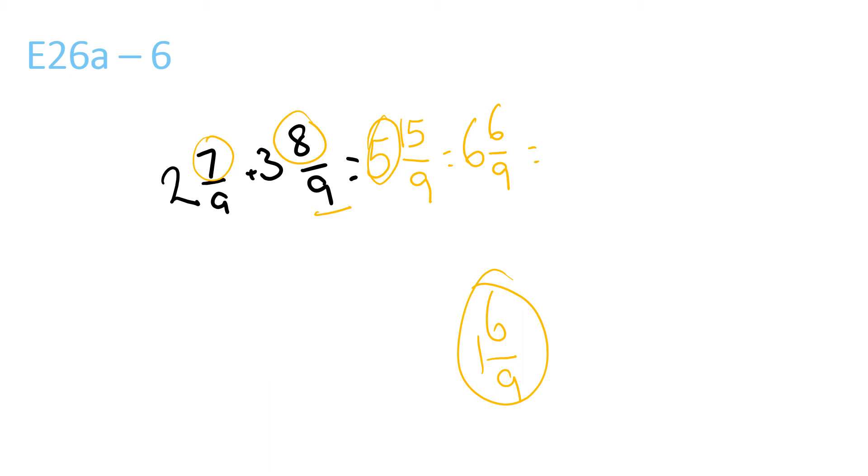6 and 9 are both divisible by 3. So it equals 6 and 6 divided by 3 over 9 divided by 3, which is 6 and 2 over 3.